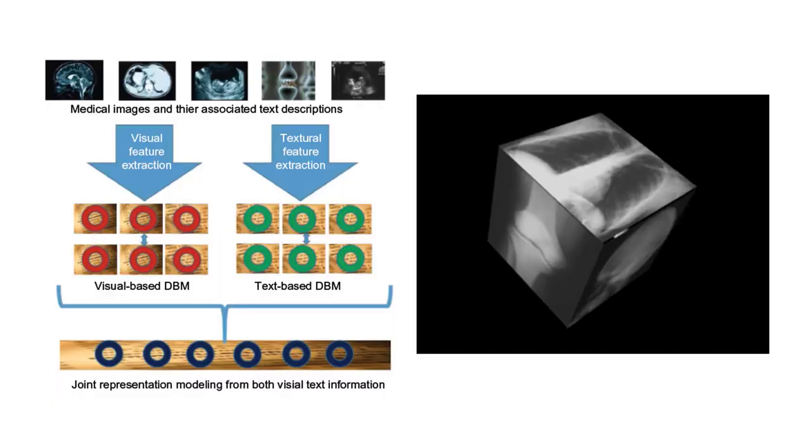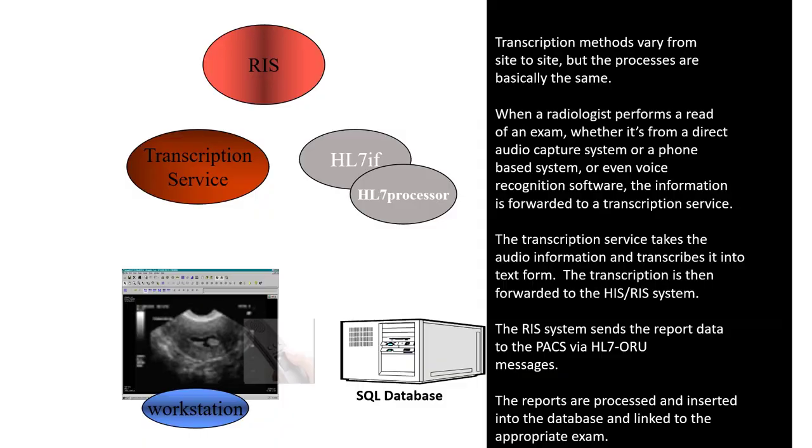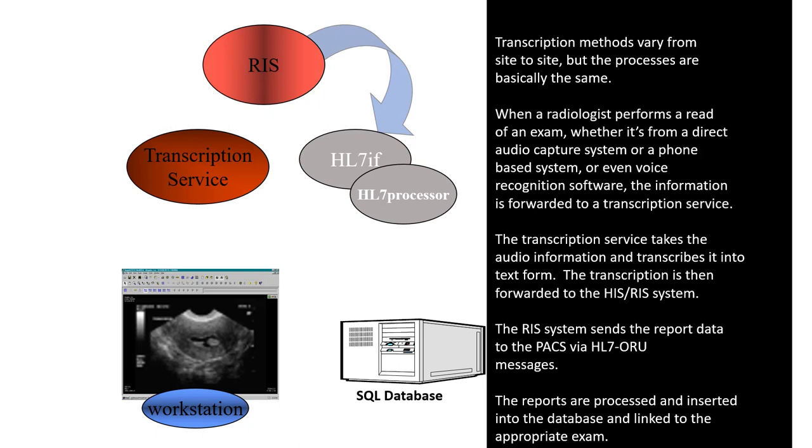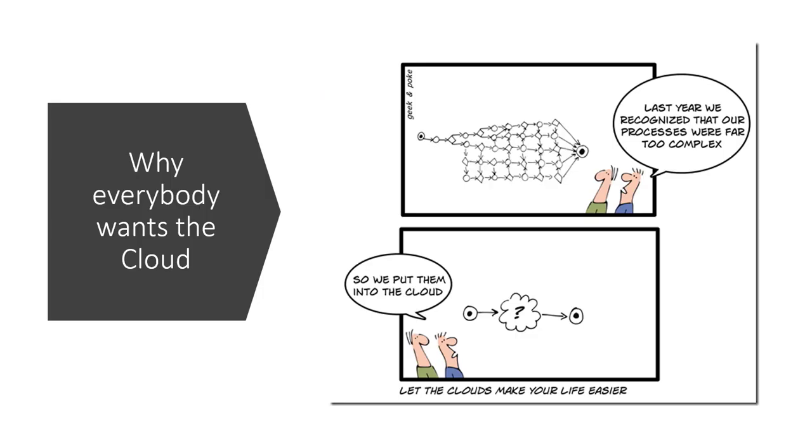When a radiologist performs a read of an exam, whether it's from a direct audio capture system or a phone-based system or even voice recognition software, the information is forwarded to a transcription service. The service takes the audio information and transcribes it into text form. The transcription is then forwarded to the hospital information system and the radiology information system. The RIS system sends the report data to the PACS via HL7 and ORU. In the past, everyone was having problems with the amount of information and the different procedures and protocols and standards that they had to use. So we kind of simplified it today.